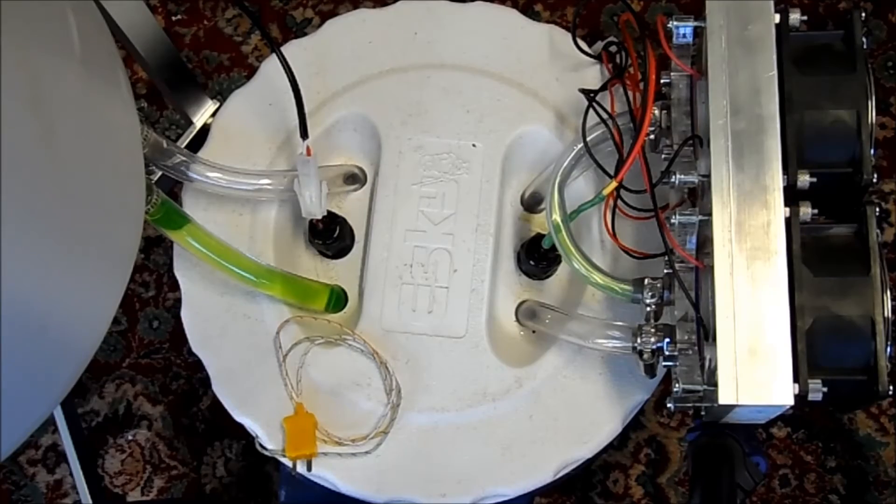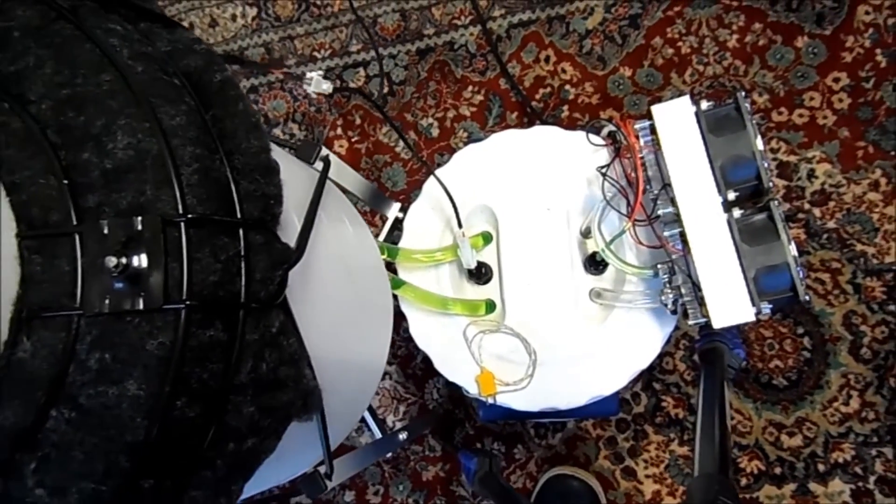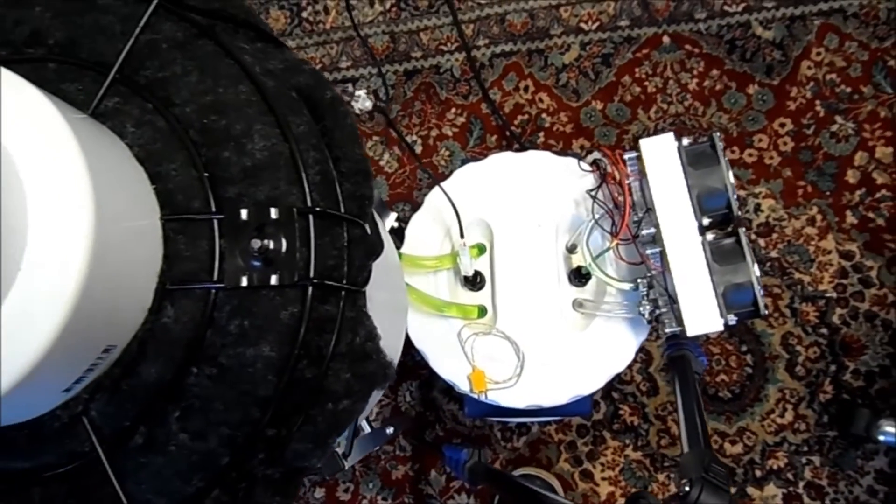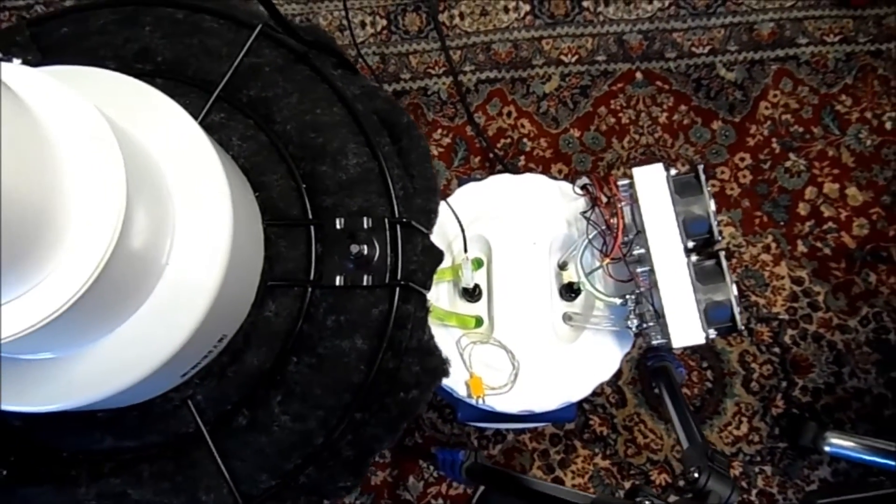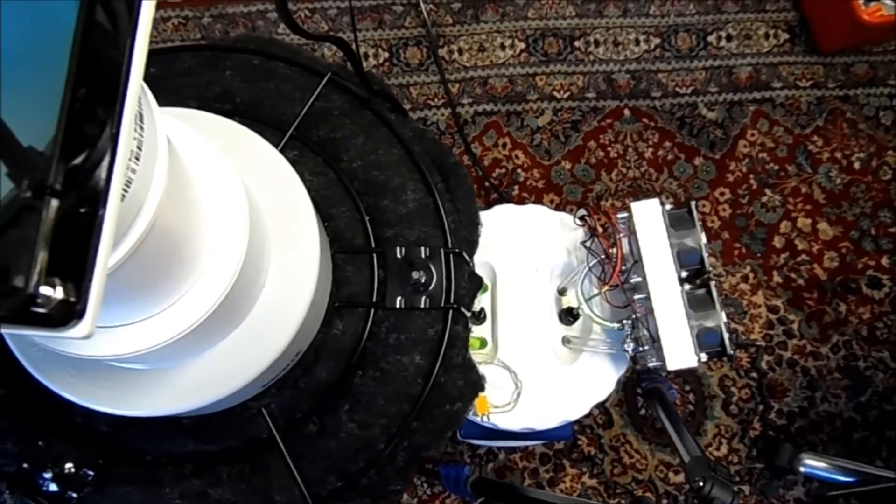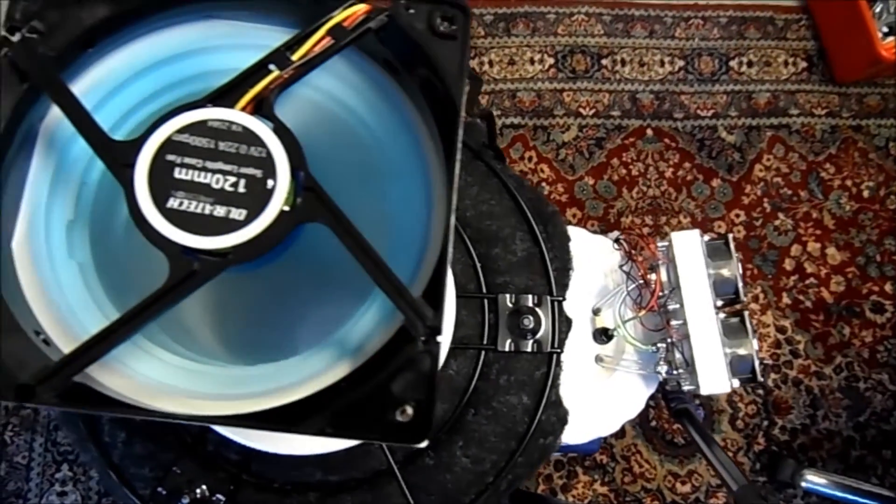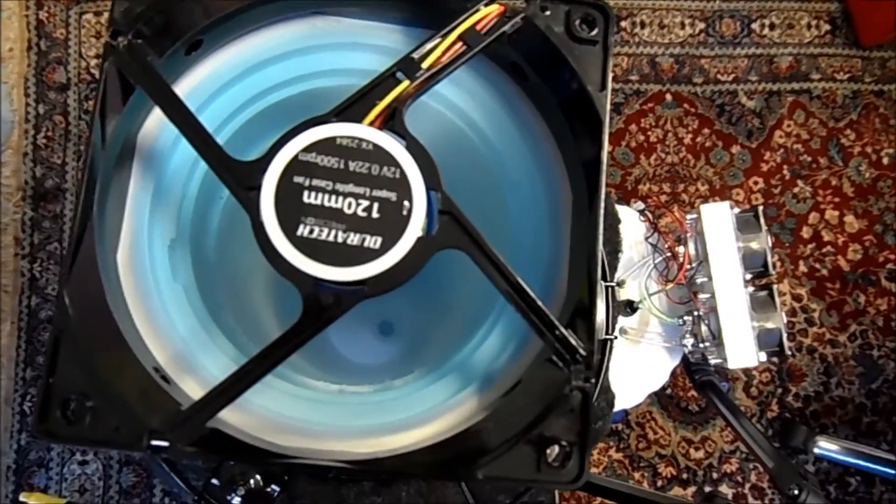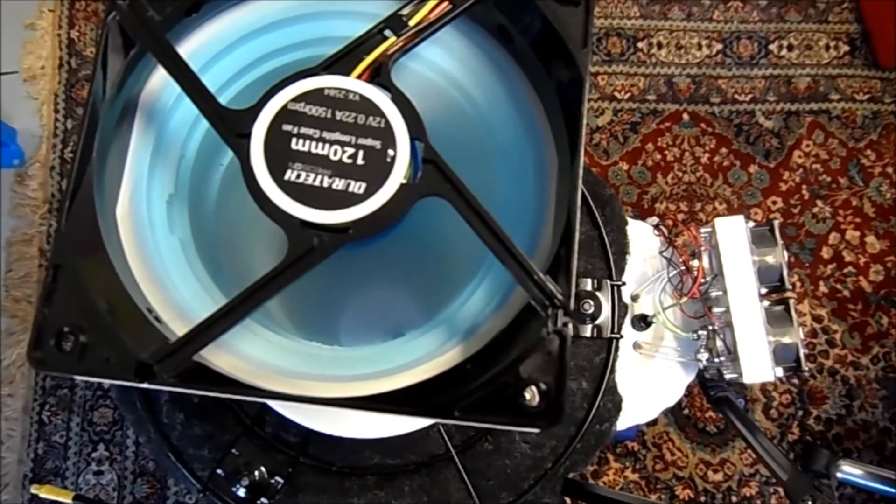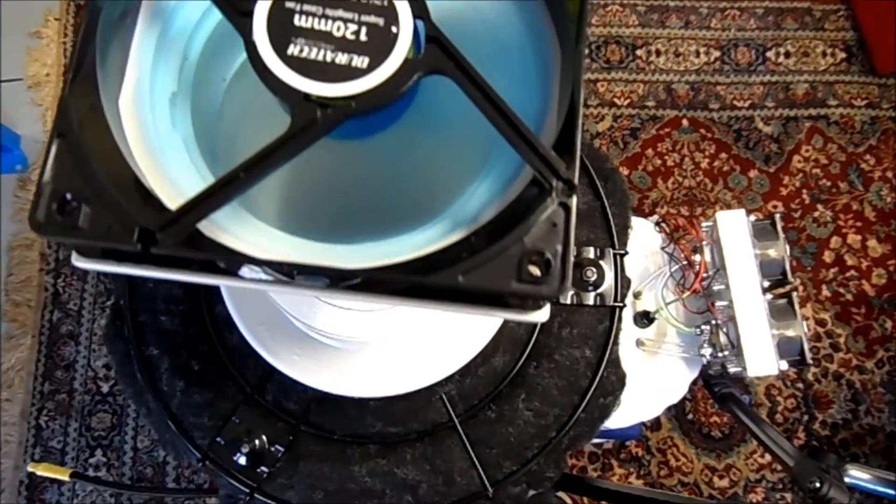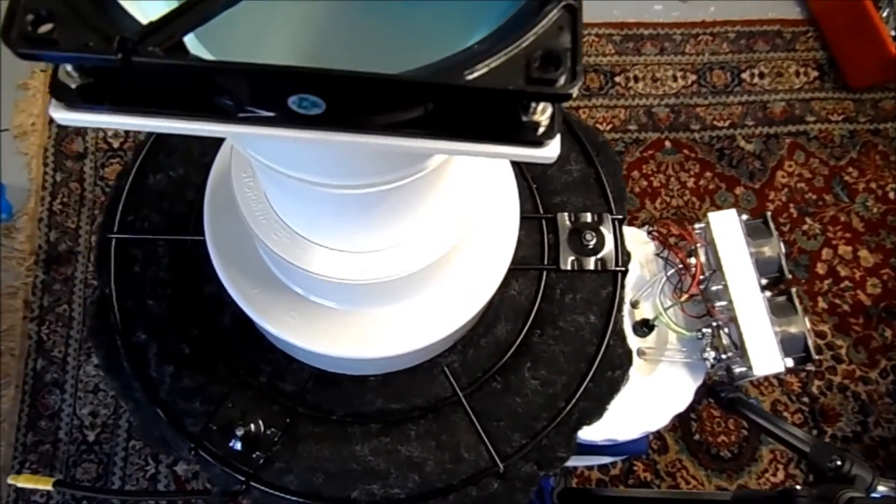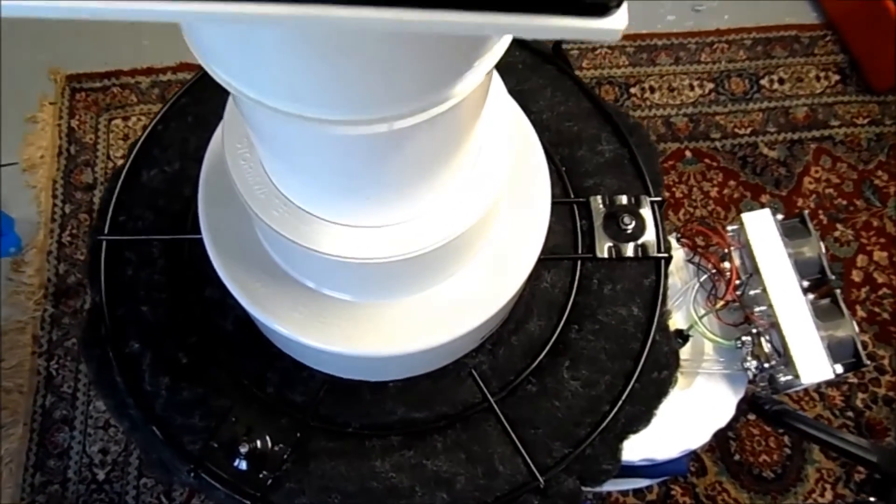You'll see an example of this later in this video. This prototype is built completely from off-the-shelf components. The fan seen here pulls air from the bottom of the vessel. Air flows down through the filter at the top and over the condenser coils inside the vessel.